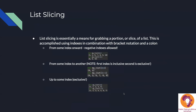List slicing is a means for grabbing a portion or slice of a list, accomplished using indexes with bracket notation and a colon. To grab from some index onward, you give the index and then a colon with nothing after it. For example, to get index three onward, write my_list[3:] — that grabs from the fourth element onward. You can also use negative indexes, so negative_three_colon grabs the last three elements of the list. It works with both normal and negative indexes.